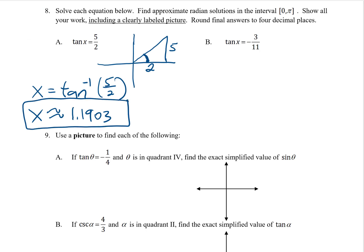Letter B. Now I can do the same thing on this one, although this one's quite a bit trickier. I want all the solutions in the interval 0 to pi — that is the period of the tangent function. It's a negative ratio this time, so I know that I should draw my picture in the second quadrant. Tangent is opposite over adjacent; the 11 would get the negative sign, and the x is clearly negative there.